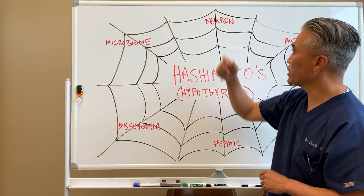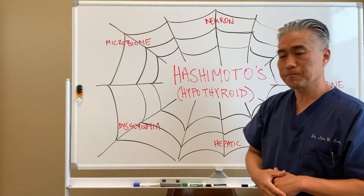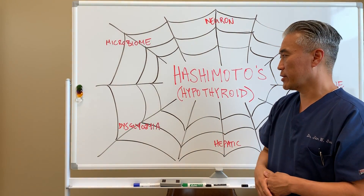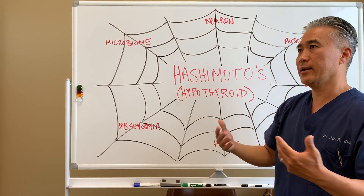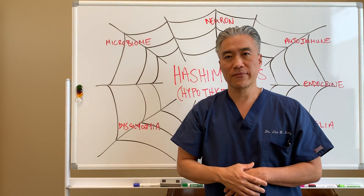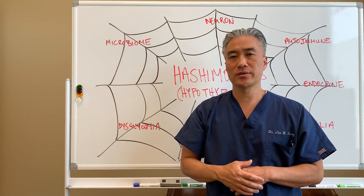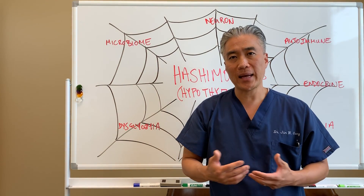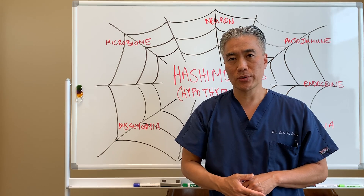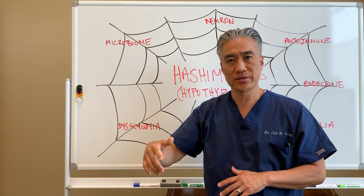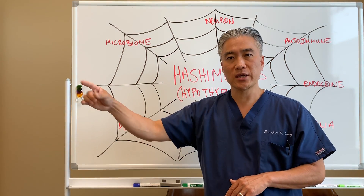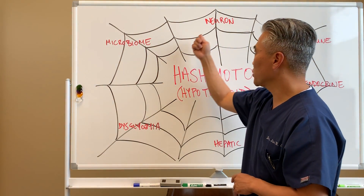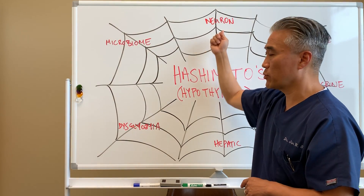Another component is that it affects neurons — it affects neurology. So it can affect the cerebellum and create ataxia, balance issues, uncontrolled movements, or shaking of the hands and so forth. So Hashimoto's can affect the neurons.